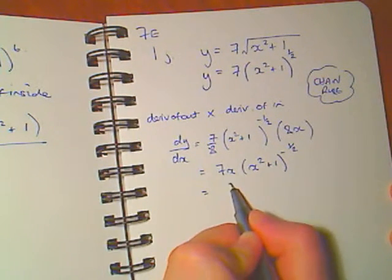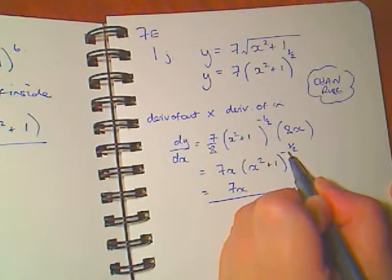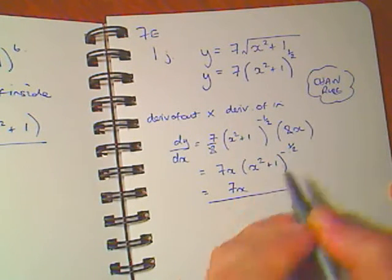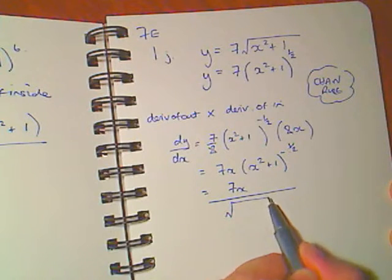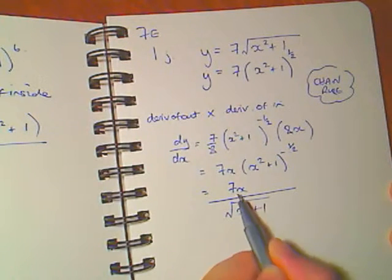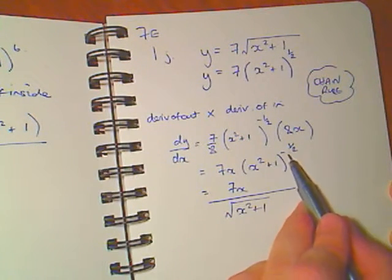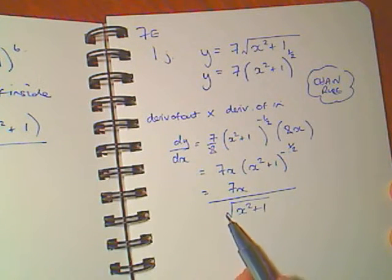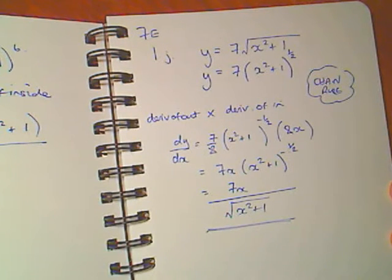The negative index means on the bottom of a fraction. Half means the square root. So this becomes 7x over x squared plus 1 and that half means it's the square root. So here is my answer.